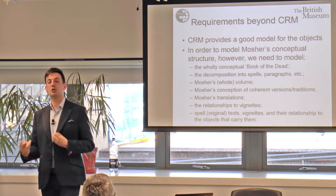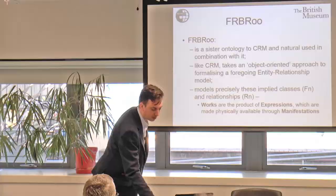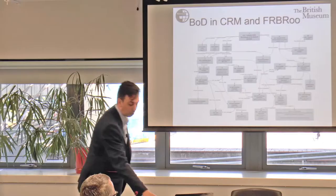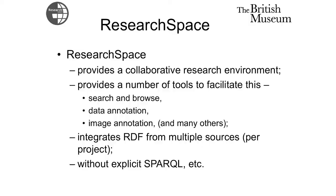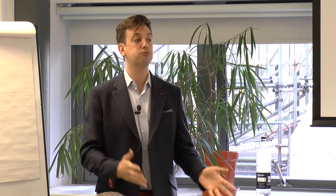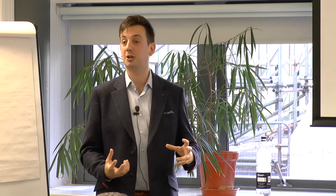We bring in another ontology called FRBRoo, which sits alongside CRM and lets us talk about things like one thing deriving from another as an expression, or an object manifesting an expression. What I want to show quickly from the ResearchSpace prototype are some of the tools for finding and building new connections, then hand over to Peter, who will talk about how we take this prototype work into a production system which is more open, more reusable, and that people can adopt parts of if they'd like to, rather than using the whole platform.